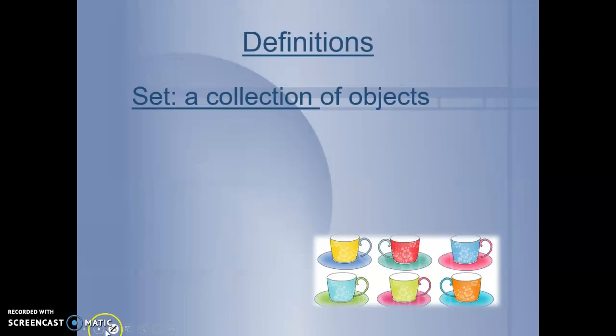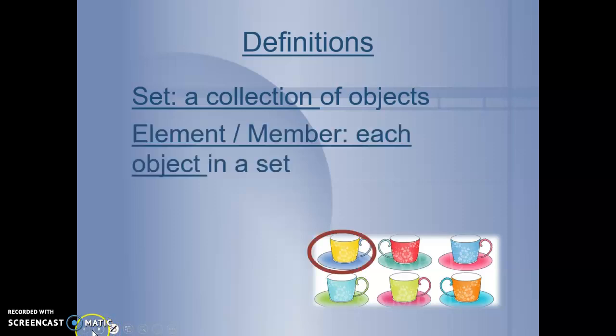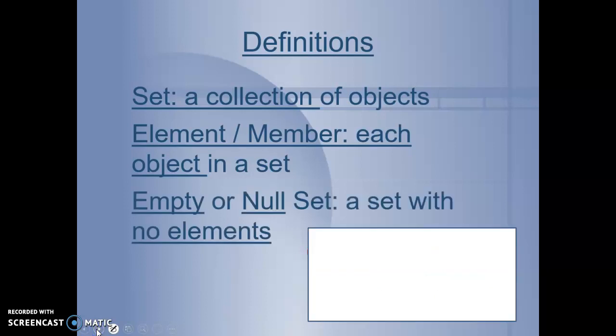Let's take a look at some definitions. A set is a collection of objects. You can see a set of teacups here below. An element, or member, is an object of a set. And so in our set of teacups, you can see we have a yellow element, a red element, a darker blue and a lighter blue element, another kind of green element, and an orange element, or member. This set has six elements, or six members.